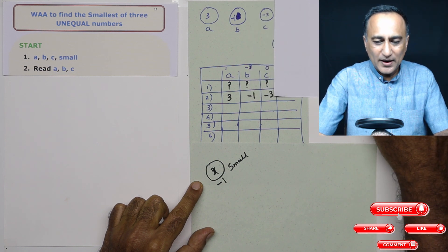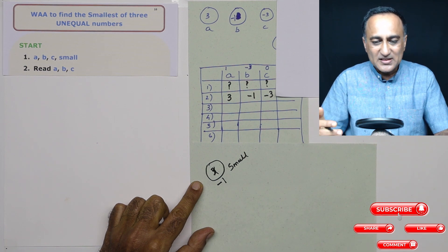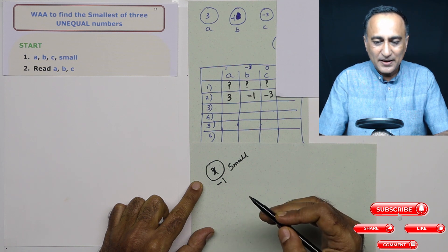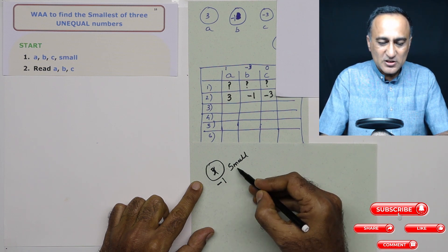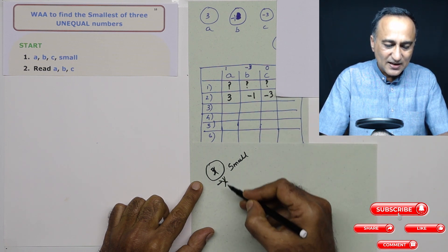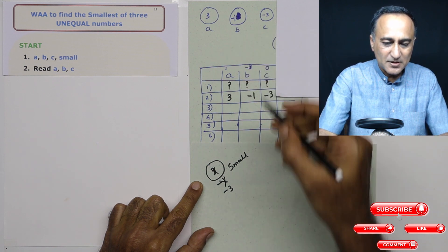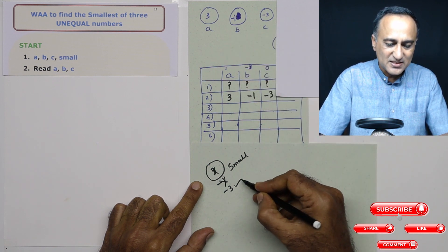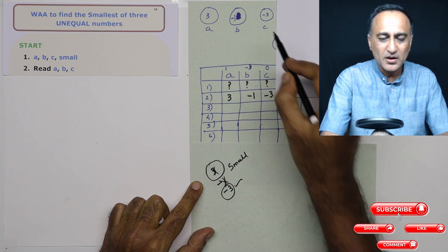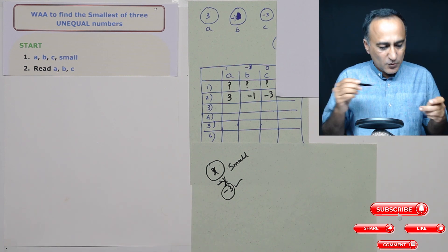After this, I look at variable c. Variable c happens to contain minus 3. So I compare minus 1, which is in small, with minus 3. Obviously minus 3 is less than minus 1. So my smallest of these three numbers happens to be c, or minus 3. I am only interested to print this value minus 3, and not the name of the variable which contains the smallest value.